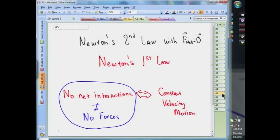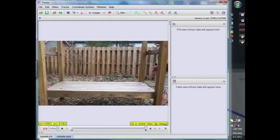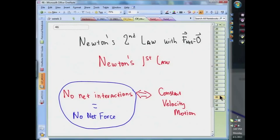Now notice, no net interactions does not necessarily mean no interactions. So for example, if we look at the soccer ball we saw earlier, we're pretty confident that the soccer ball is interacting. It has the pull of the Earth's gravity, and the ball is in contact with the surface. Newton's first and second laws don't let us figure out how many interactions there are in any given situation. All they tell us is that if the interactions add up to zero, the object must move at a constant velocity.